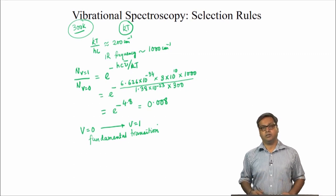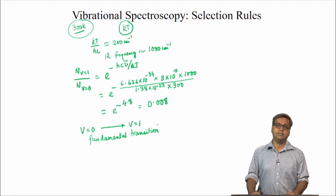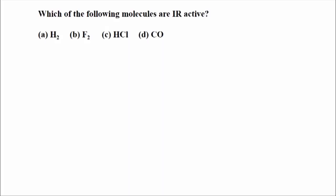Now let us look into some problems. The first question: which of the following molecules are IR active? We have four choices: H₂, F₂, HCl, and CO. H₂ and F₂ are homonuclear diatomic molecules, while HCl and carbon monoxide are heteronuclear diatomic molecules. So HCl and CO will be IR active — the correct answers are C and D.